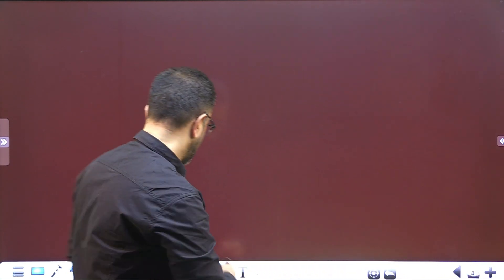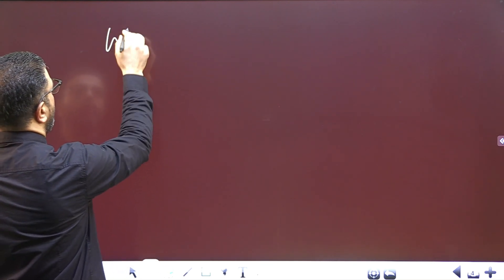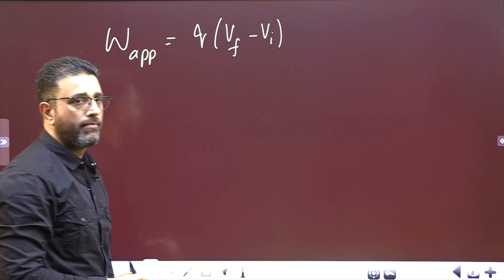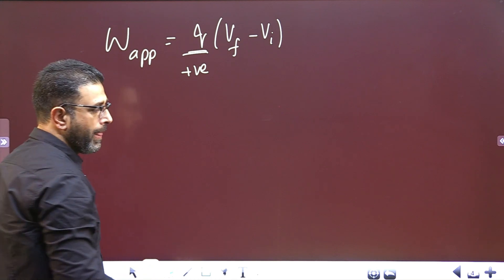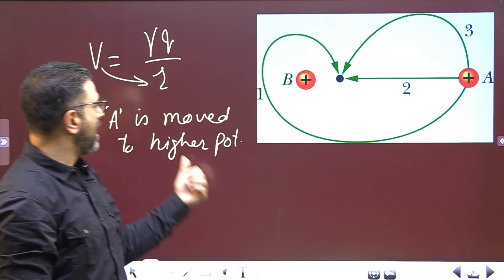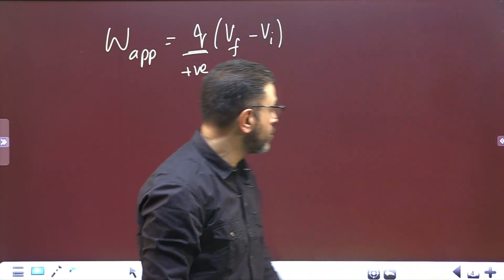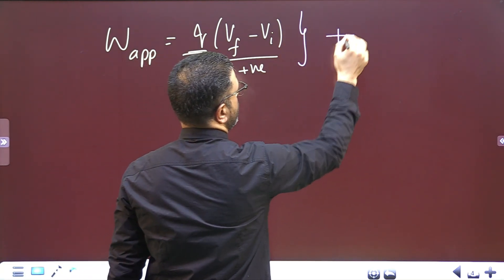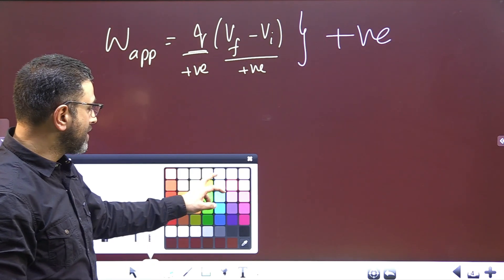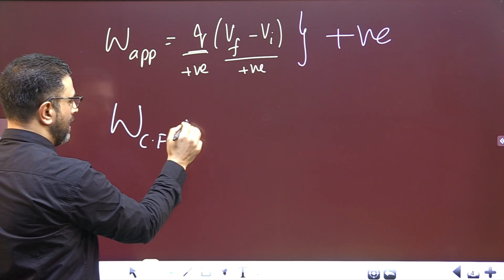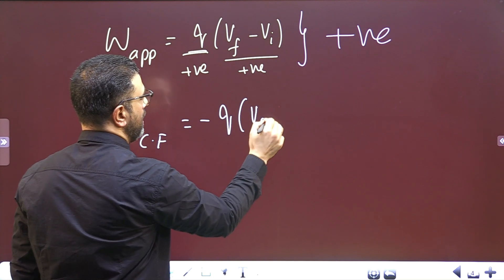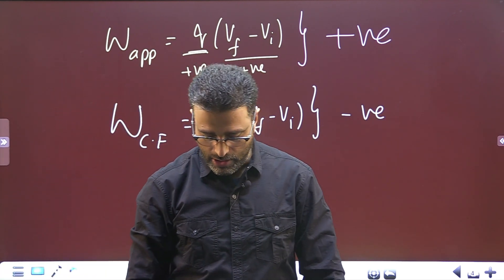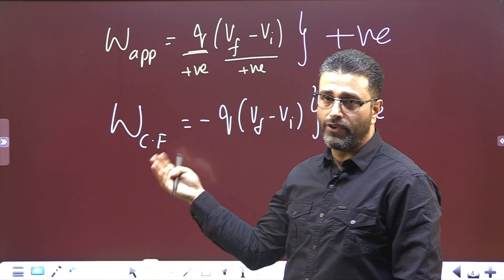The charge to be moved is positive. Work done by the applied force is q times delta V, meaning final potential minus initial potential. Since A is being moved to a higher potential, V_final is greater than V_initial, so delta V is positive, and q is positive — therefore work done by the external agency is positive. Consequently, work done by the field, which is negative of q times delta V, is negative.